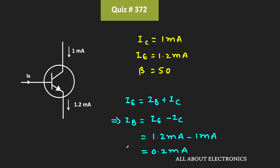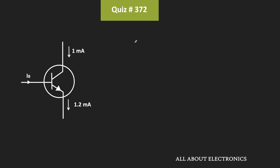That means this base current IB is equal to 0.2 mA. Now for the transistor, we also know that this collector current IC is equal to β times IB.